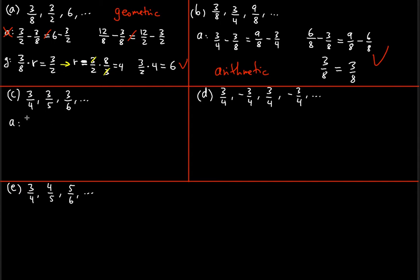Part C — same test. For arithmetic, we check whether 3/5 minus 3/4 equals 3/6 minus 3/5. I'm checking that the difference between the first two adjacent terms is the same as the difference between the second two adjacent terms — that's what a common difference requires.